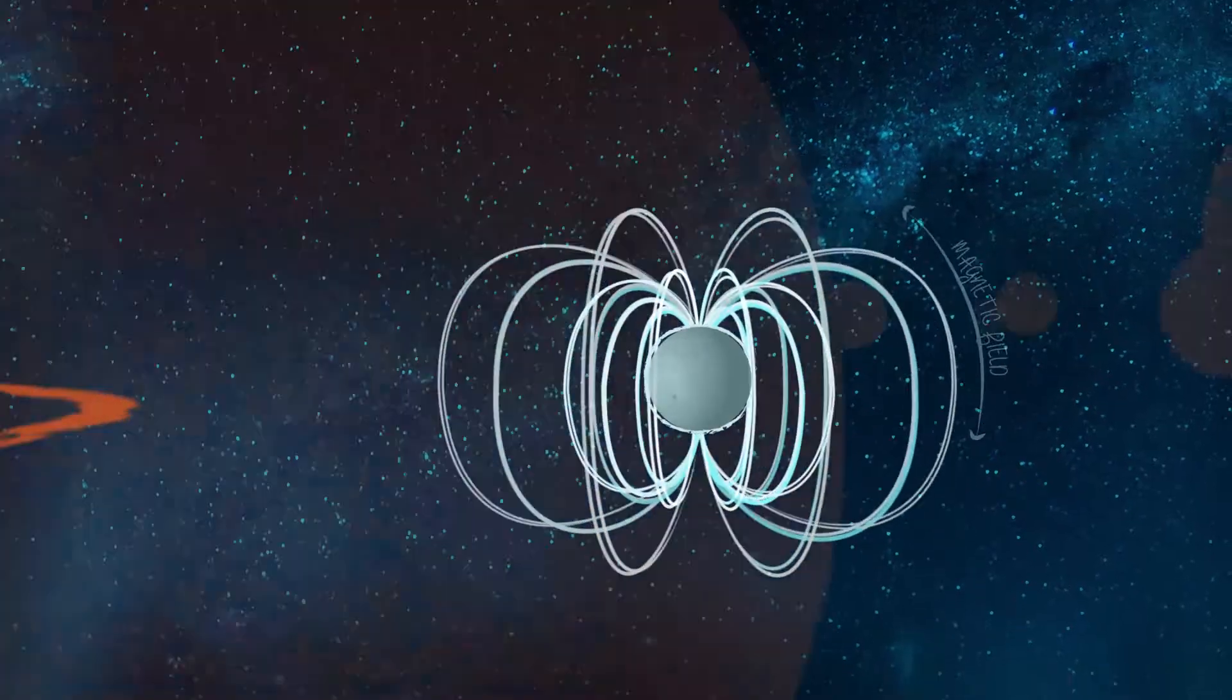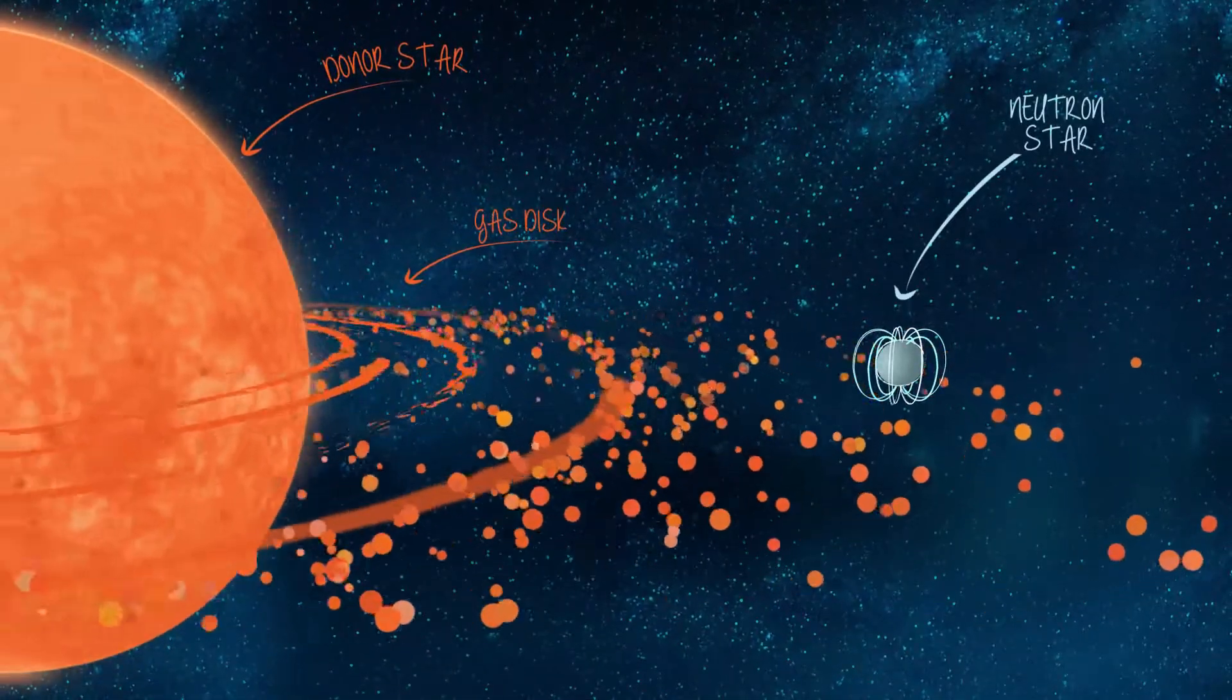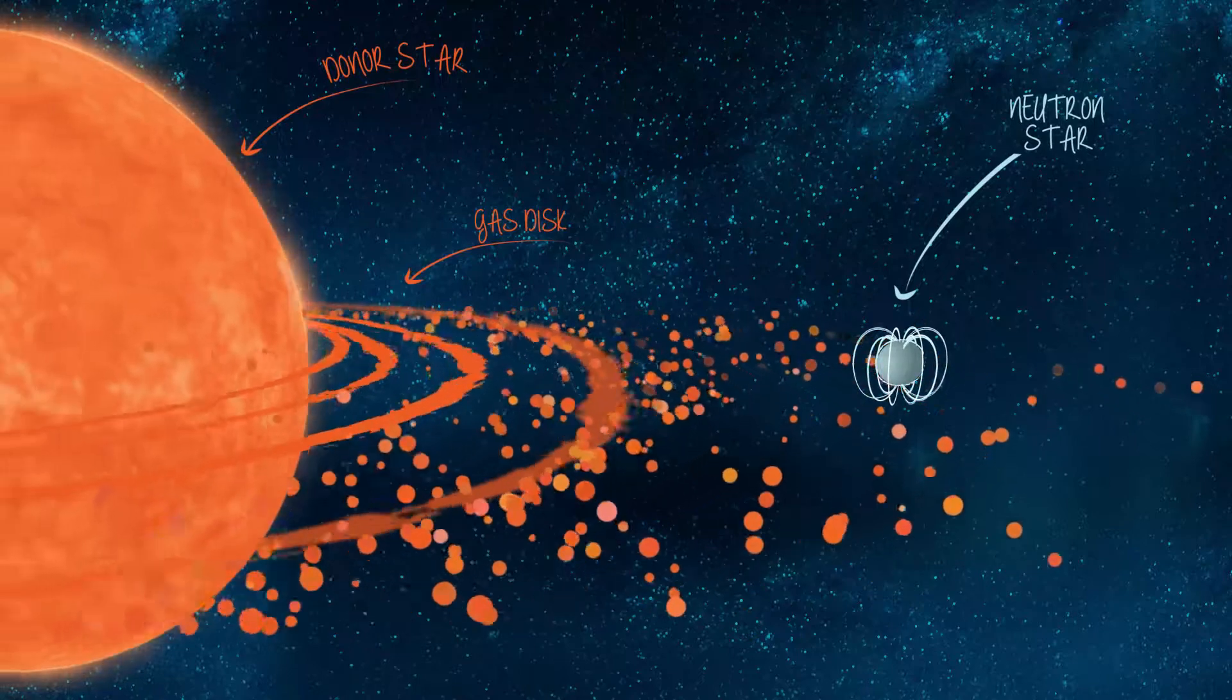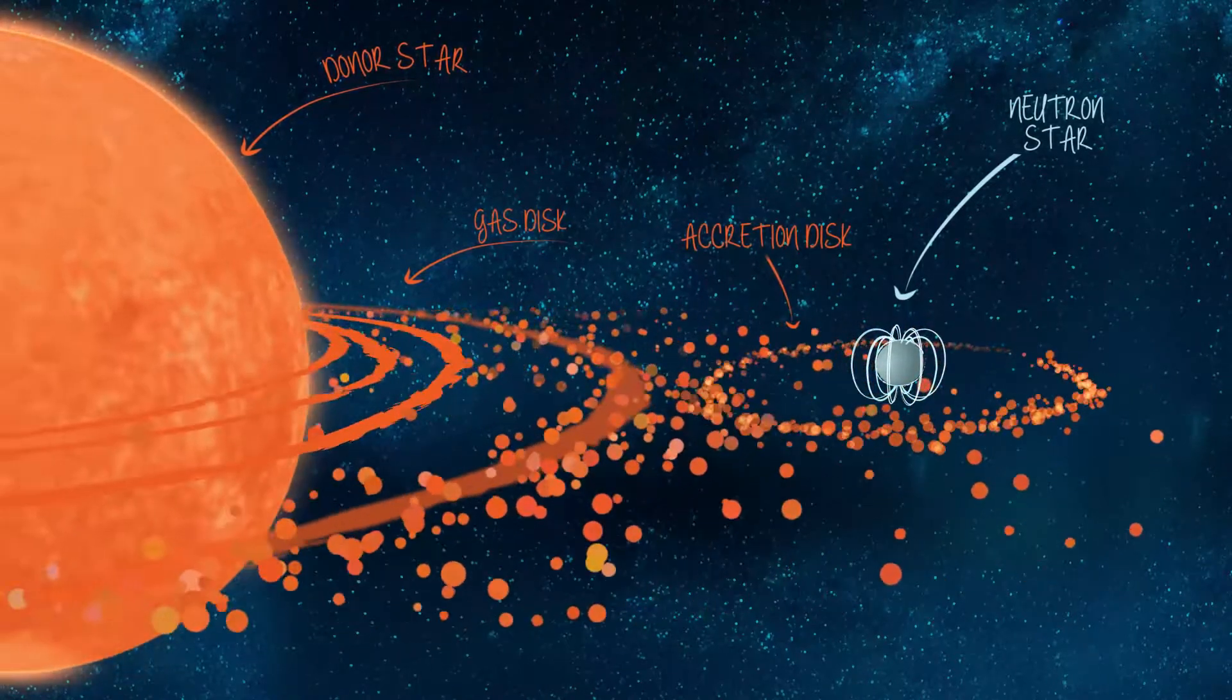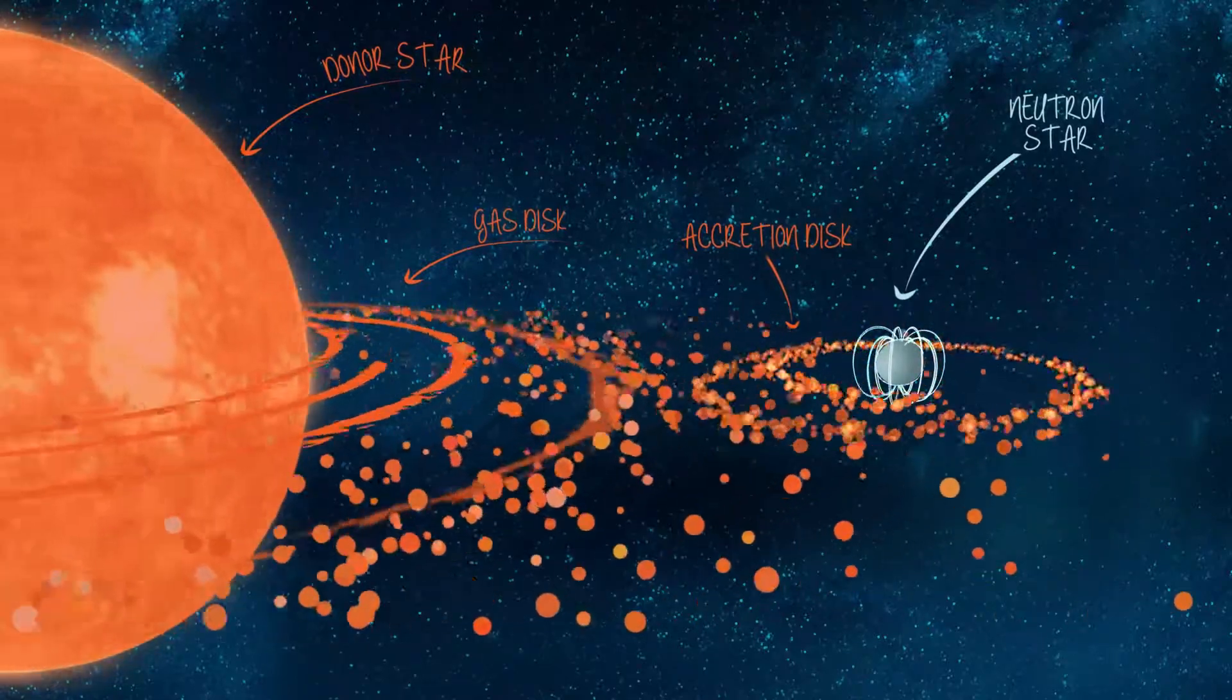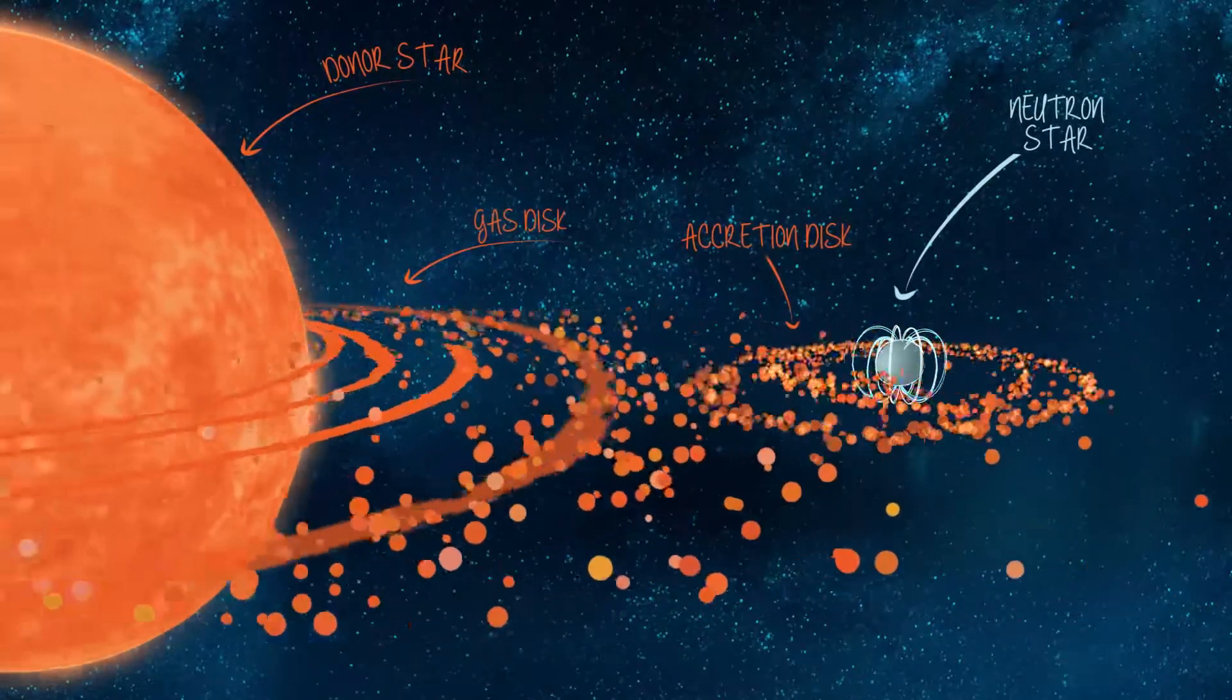Often, neutron stars are not alone, but orbiting around a normal star. With such an immense pull, a neutron star can strip away the outer layers of its host, with material spiraling towards it like a giant gravitational whirlpool.